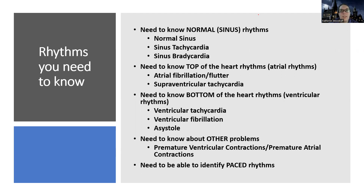Needless to say, this is a list of the rhythms you're going to need to know or be able to identify this semester. You'll need to know others in later semesters, and some of these could be tested on later too. We focus on what's normal, AFib and AFlutter, SVT, ventricular rhythms like VTac, VFib, and Asystole. We talk about PVCs or PACs, and you have to be able to identify pace rhythms — not identify problems in them, but recognize that it's a pace rhythm.